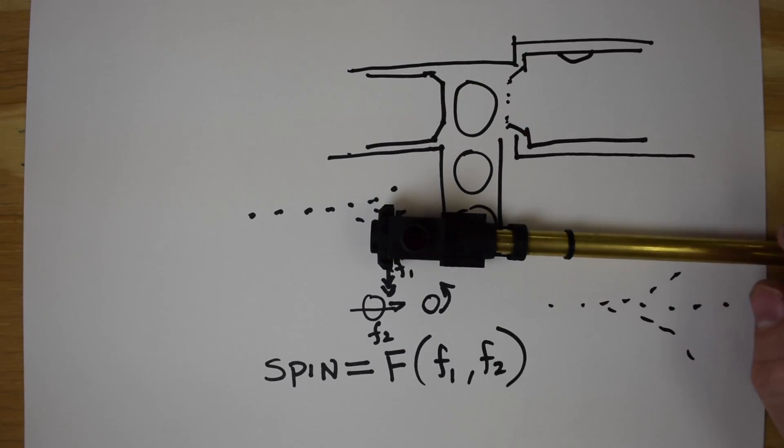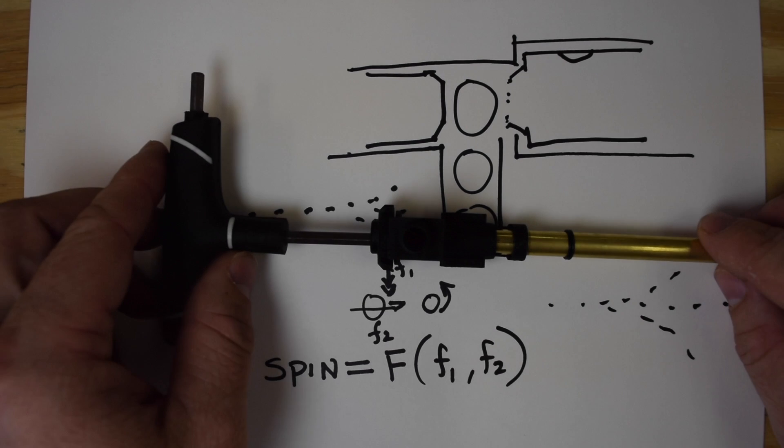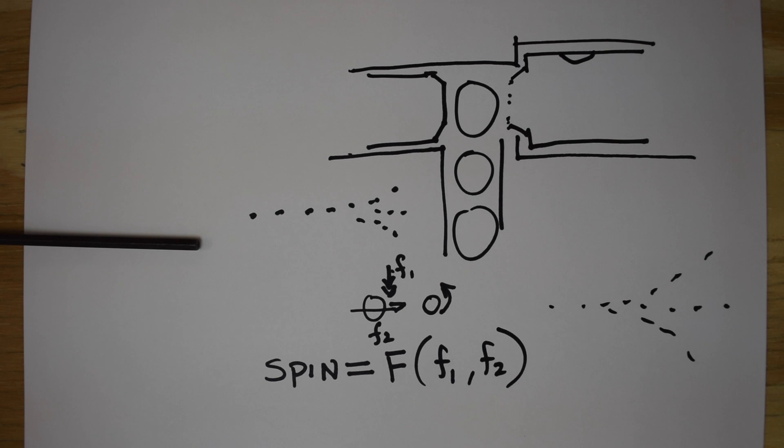On this bucking, if I drop the BB in, the BB will push right past with almost no resistance and go down the barrel.